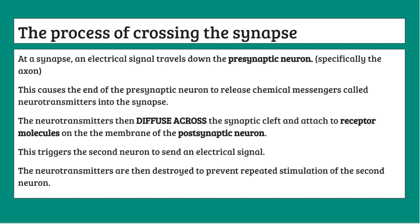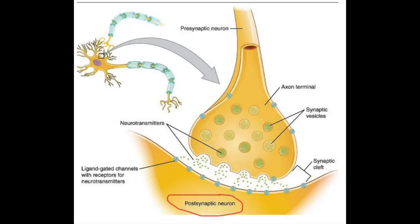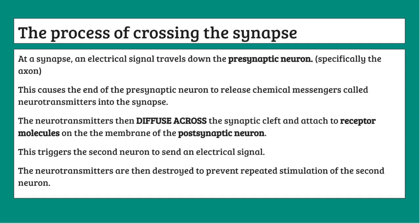The neurotransmitters then attach to receptor molecules located on the membrane of the post-synaptic neuron — the neuron that comes after the synapse, the second neuron in the sequence. The receptor molecules' role is to receive the neurotransmitters. Importantly, these receptor molecules on the second neuron only bind to the specific neurotransmitters released from the first neuron — they won't bind to neurotransmitters from any other neurons.